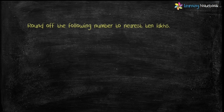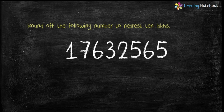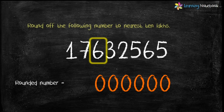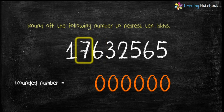Now let's round off the following number to the nearest 10 lakhs. The steps remain the same except now we will look at the lakhs place. Here the lakhs digit is 6, which is greater than 5. So first replace 632565 by 0, then increase the 10 lakhs digit, which is 7, by 1 — 7 plus 1 equals 8. Keep the remaining digits as they are. Therefore the rounded number is 1 crore 80 lakhs.